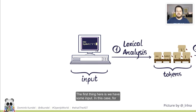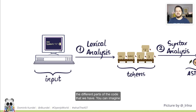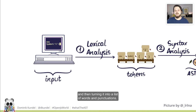The first thing here is we have some input — in this case, for example, new symbol one. The compiler will perform what is called a lexical analysis on that, which means it will turn that text into a set of tokens: a list of tokens representing the different parts of the code. You can imagine this being the equivalent of taking a text written in English and then turning it into a list of words and punctuations.